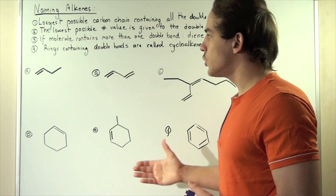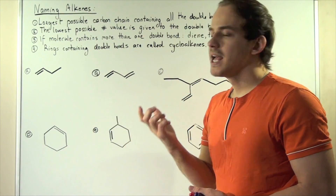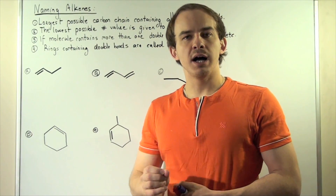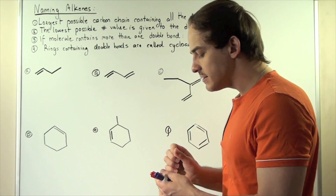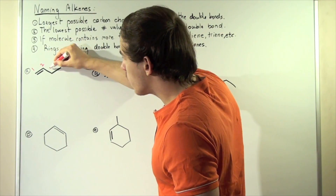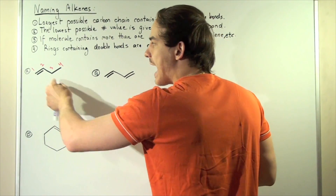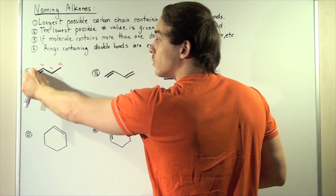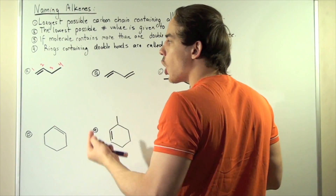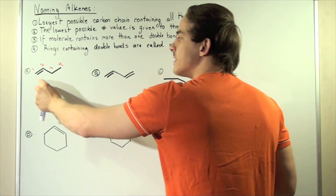Here we have six examples. Let's look at example A and name our alkene. Our first and second steps tell us we have to find the longest possible carbon backbone and assign the double bond the lowest possible number value. So we begin on this end: carbon one, carbon two, carbon three, carbon four. We have a four-carbon backbone and our double bond gets assigned number one because it begins on carbon one. If we numbered from the other end, the double bond would get a three, so we choose this direction.